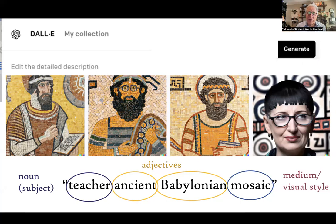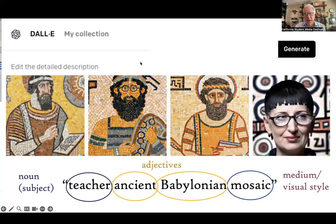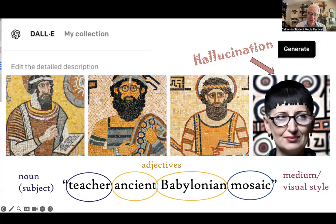When you're building a prompt for a picture, you want a noun, adjectives, and a visual medium style. Would it benefit students to know these are the things AI recognizes? Yes, I think so. But when I generated those four pictures, one of them looked nothing like an ancient Babylonian mosaic — that's what we call a hallucination. You do have to check things. It's not entirely without need for human direction.